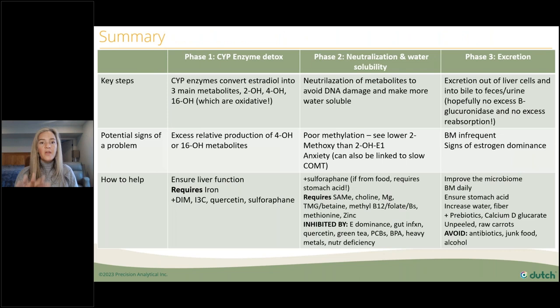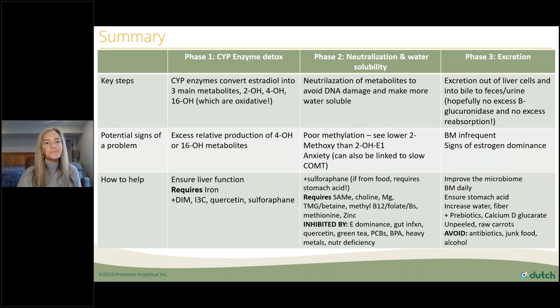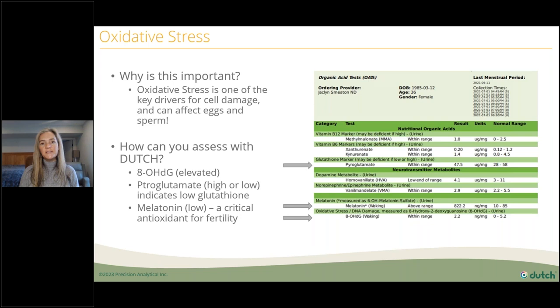I've included some of my favorite therapeutics for each phase: supporting phase one, phase two methylation, and excretion into the gut. Now let's move beyond hormones. I want to spend time on the other things you can learn from the Dutch Test regarding fertility. The first is oxidative stress — one of the key drivers of cell damage in the body, and especially relevant for egg and sperm health. Men make millions of sperm per ejaculate partly because many are damaged by oxidative stress.